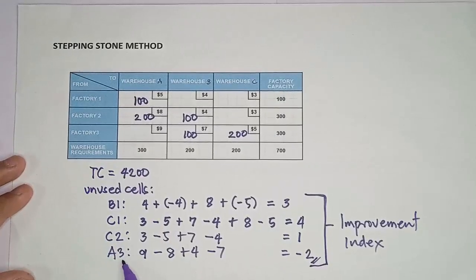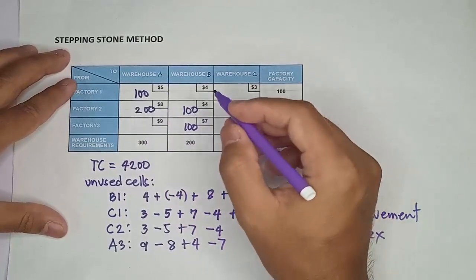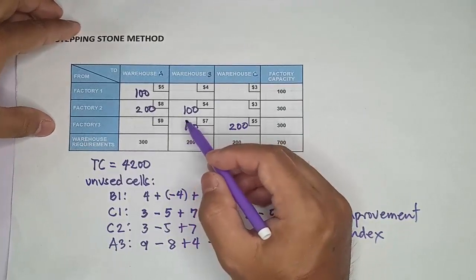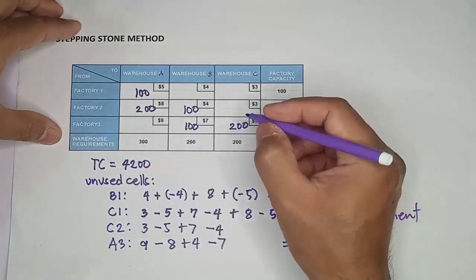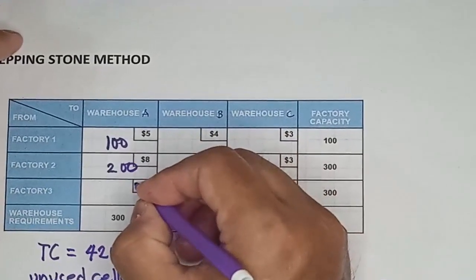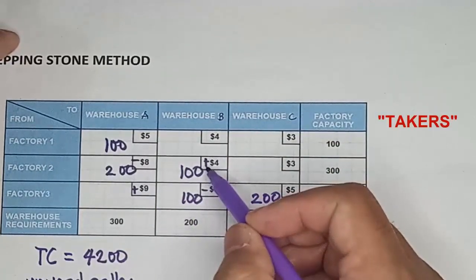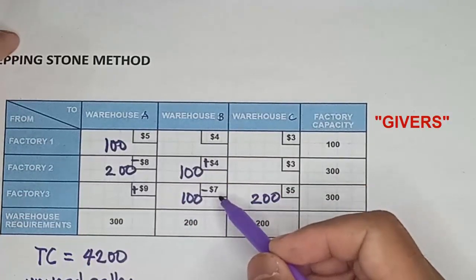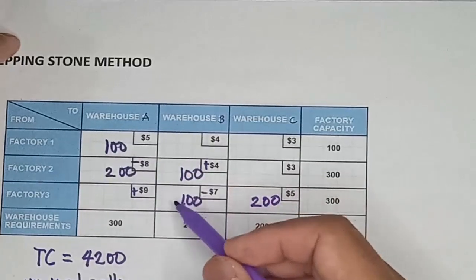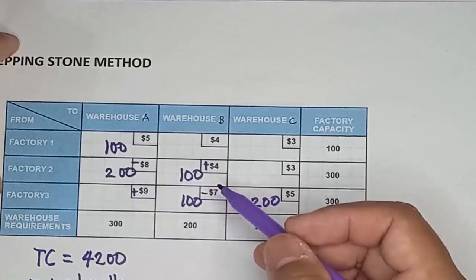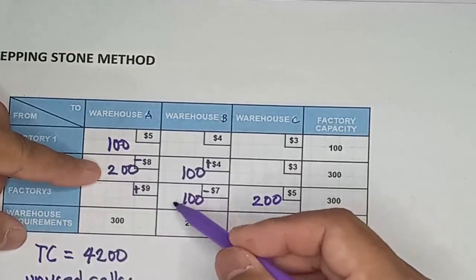Since the negative number belongs to A3, we can do a redistribution on the loop of A3. Going back to the signs of the transportation costs for this loop: the positive ones are called takers and the negative ones are givers. The quantity to be redistributed is the lowest quantity among the cells with negative signs. We're going to choose between 200 and 100, so the lower value is 100 — meaning we're going to redistribute 100 units on the loop of A3.